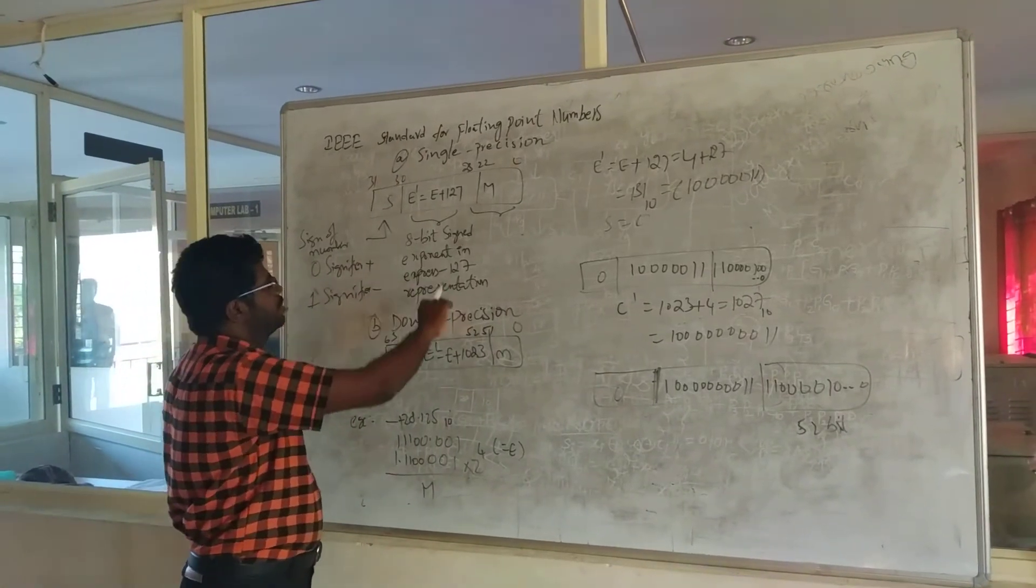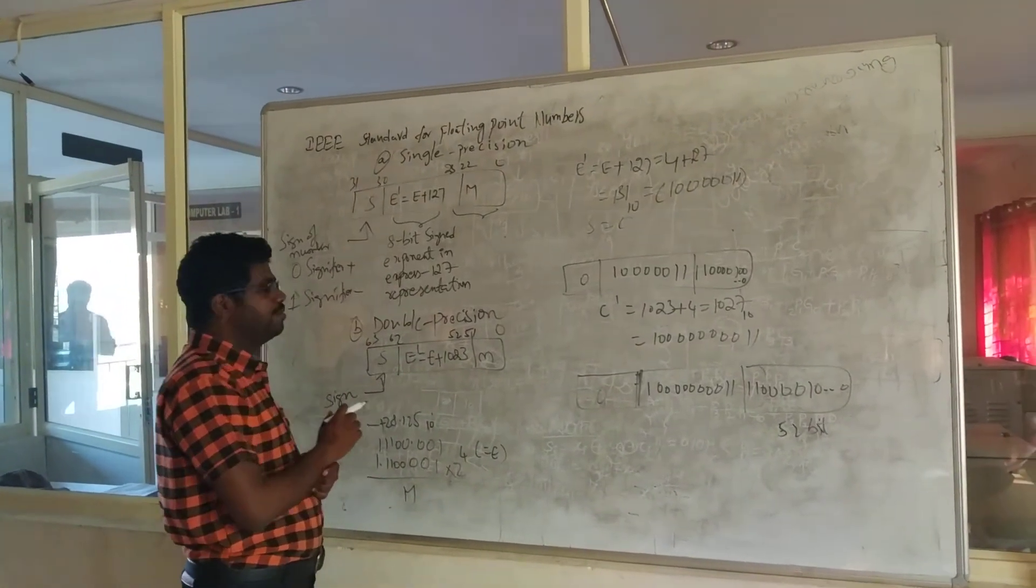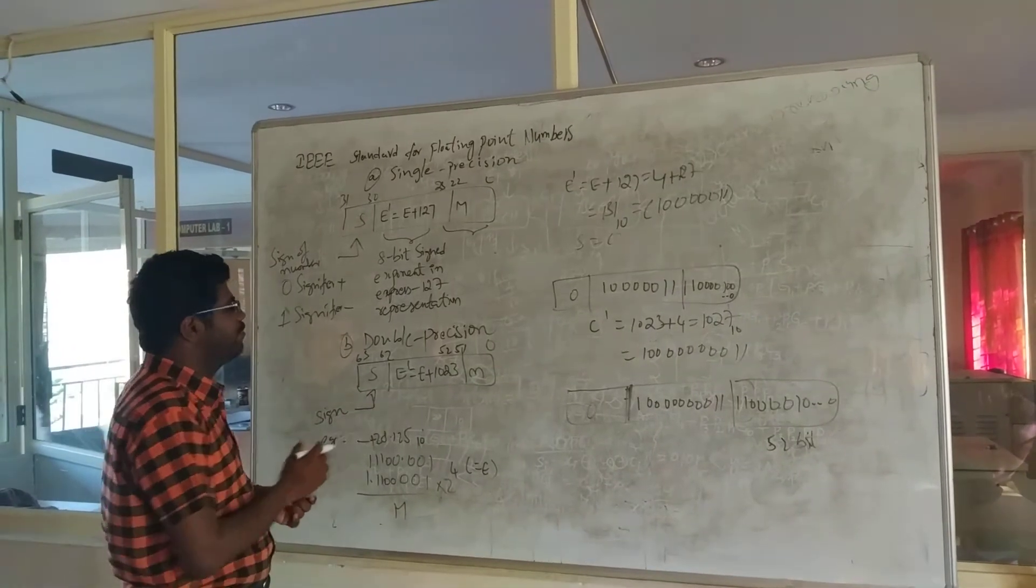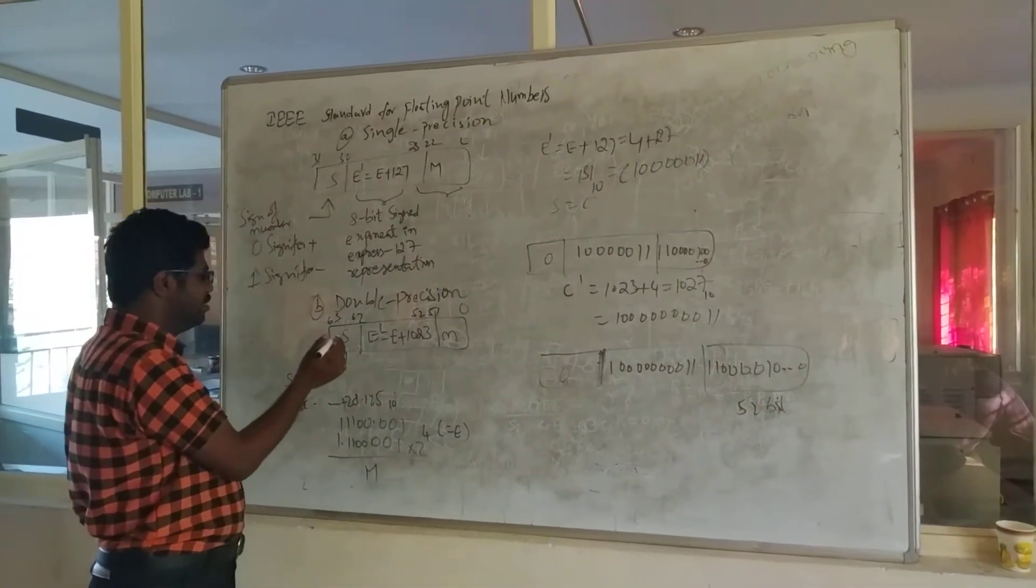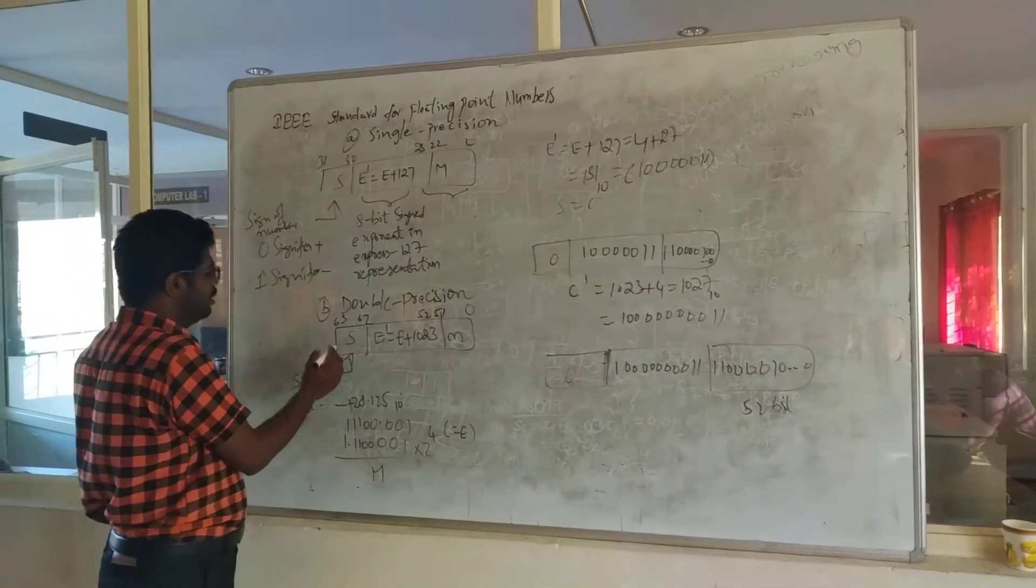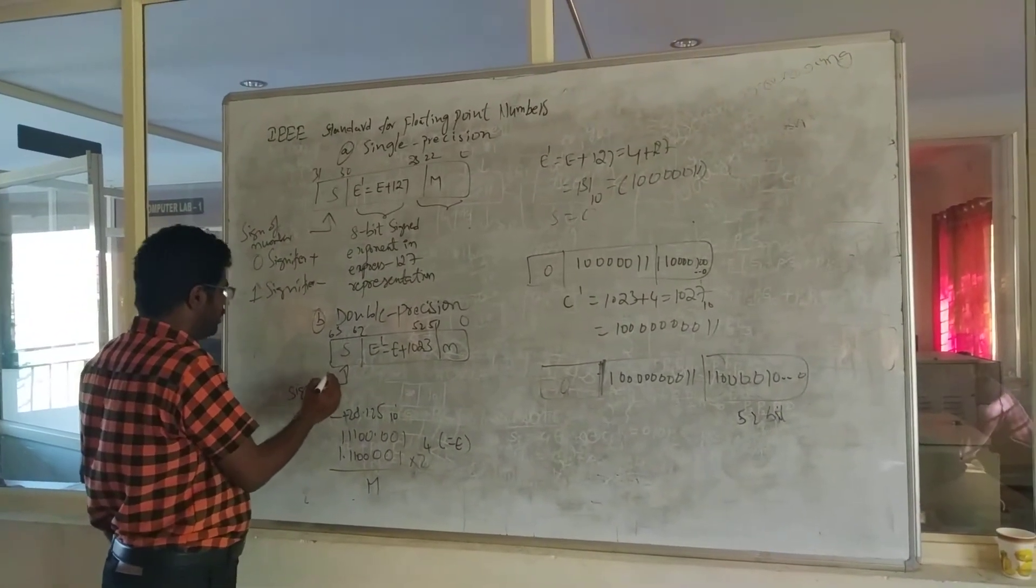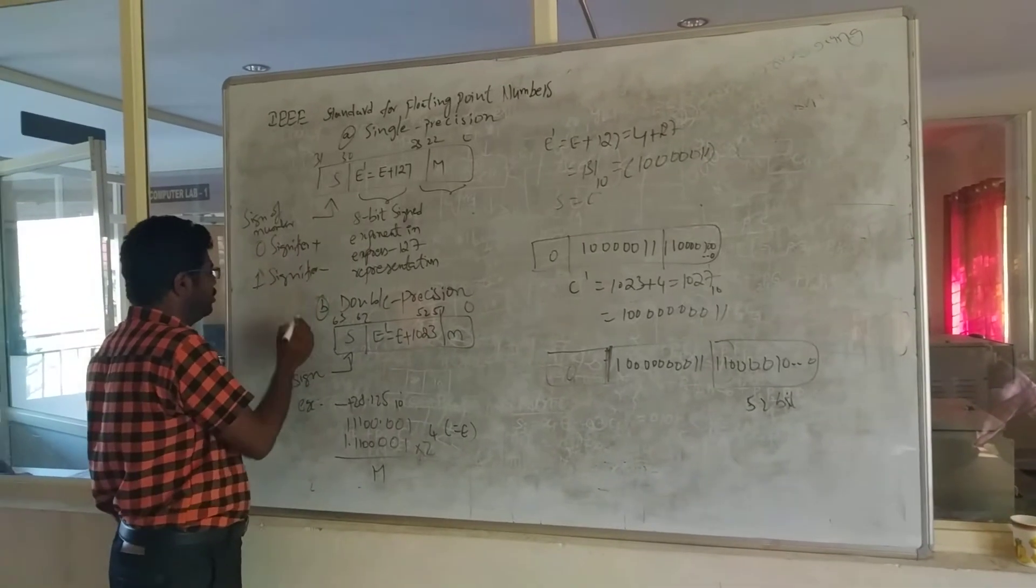Similarly, how is double precision? Double precision consists of 64 bits, that is 0 to 63. It consists of 3 parts similar to single precision: first is the sign bit, where 0 represents positive.